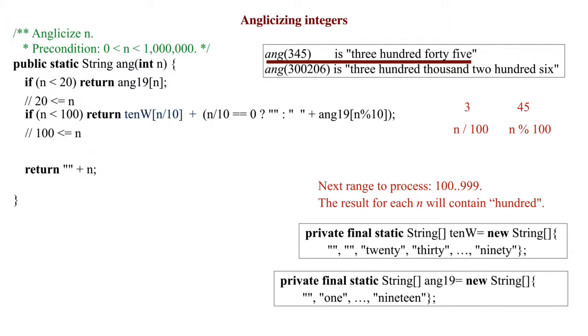Taking a cue from the previous development and not yet anglicizing, we write the statement to return a string containing n div 100, the word hundred with a blank before it, and then either the empty string or a blank followed by n remainder 100.